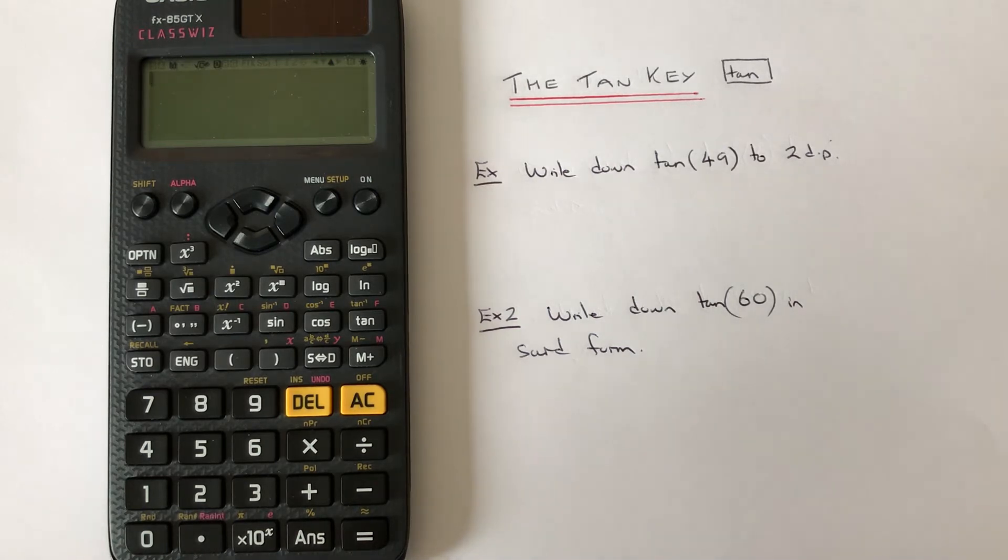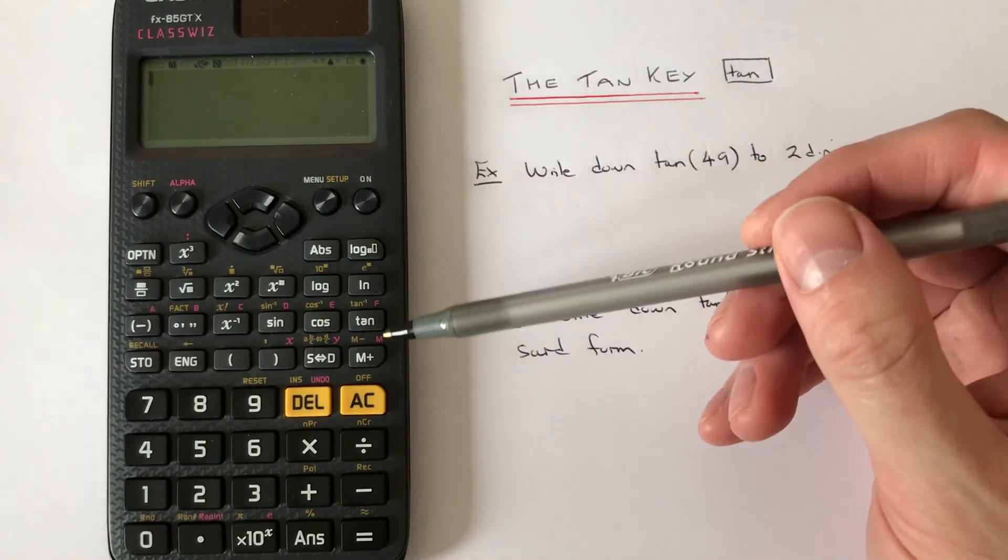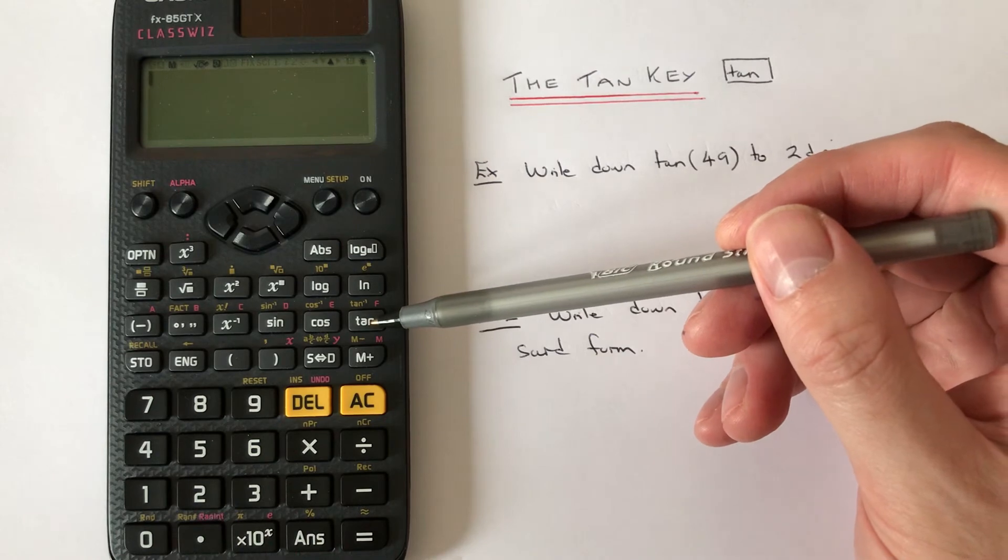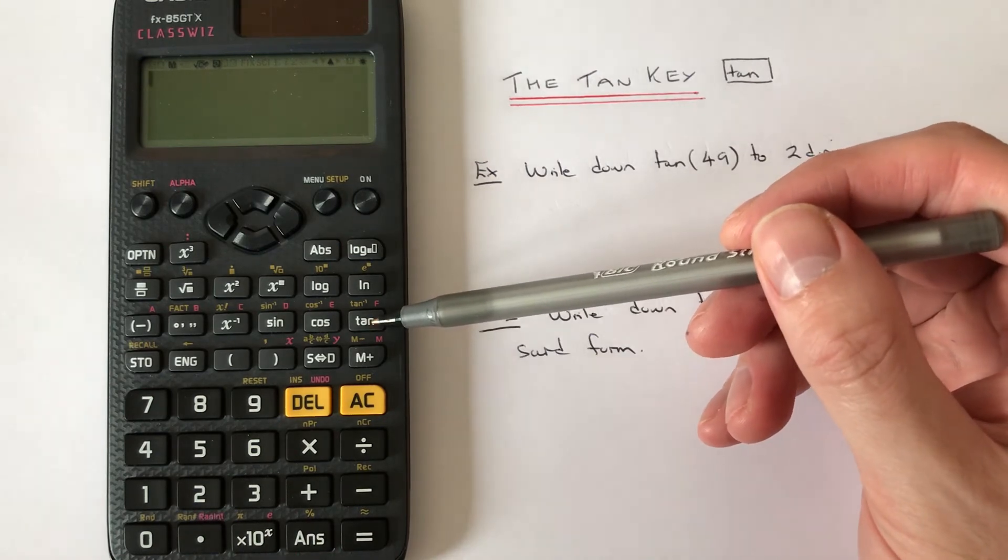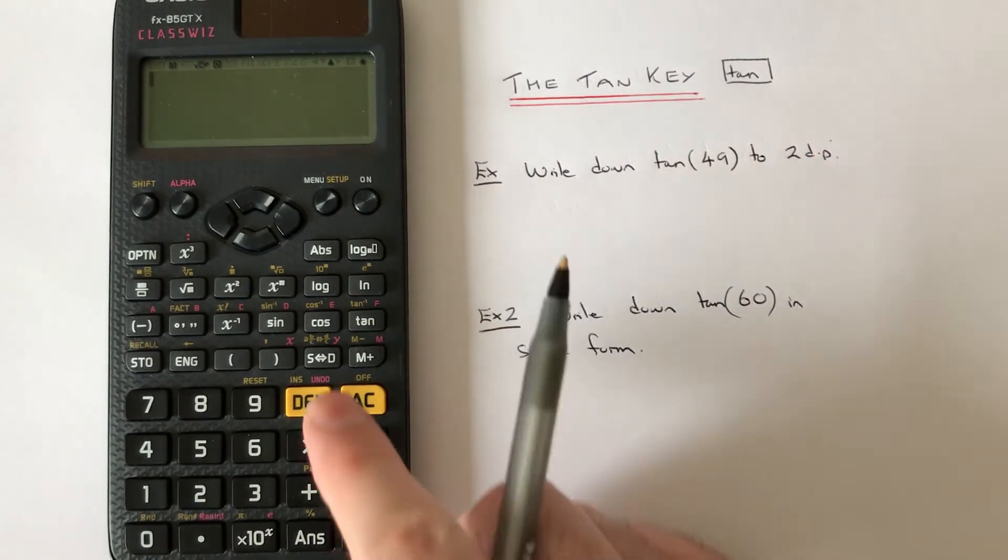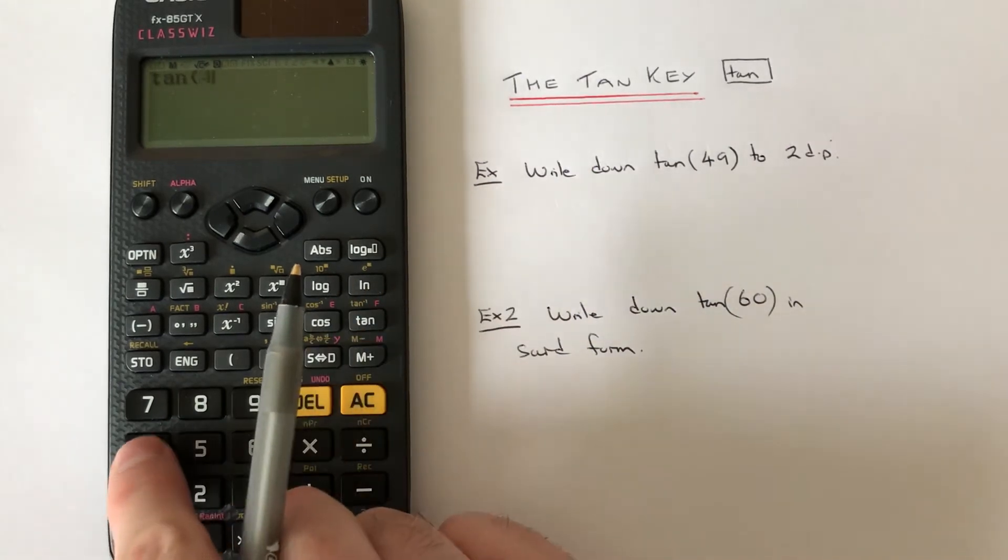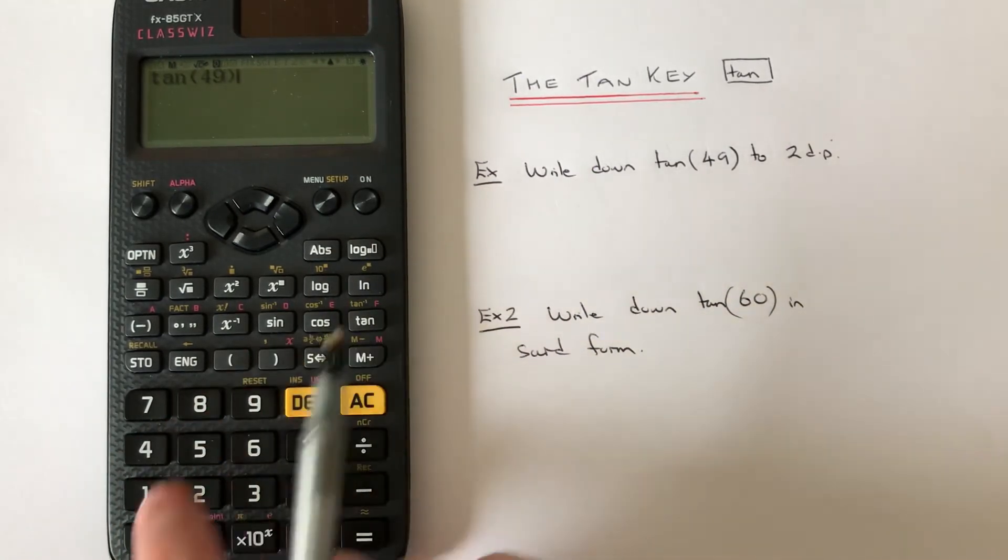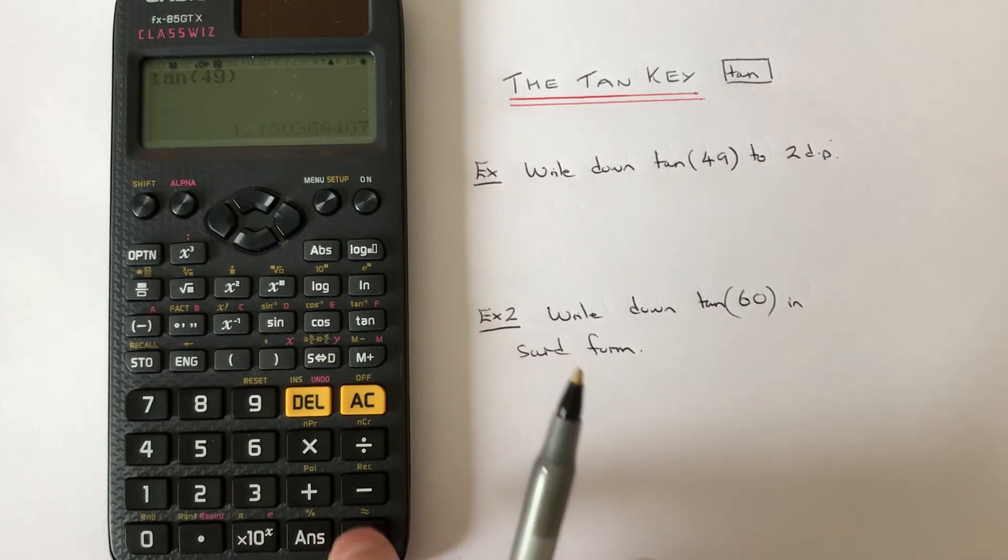Example A: Write down the value of tan(49) to two decimal places. The tan key can be found on the third row of the scientific functions. Press tan, type in 49, then close the bracket at the end. Press the equals key and we get 1.15 to two decimal places.